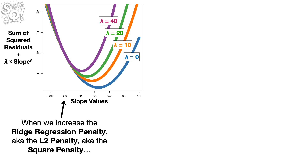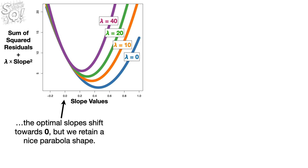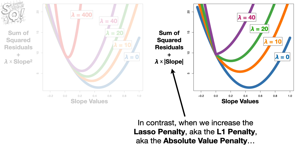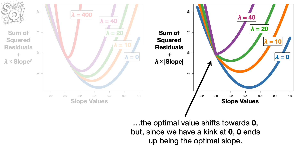In summary, when we increase the ridge regression penalty — a.k.a. the L2 penalty, a.k.a. the squared penalty — the optimal slopes shift towards 0, but we retain a nice parabola shape. And even when we set lambda to something crazy high like 400, we still end up with an optimal value greater than 0. In contrast, when we increase the lasso penalty — a.k.a. the L1 penalty, a.k.a. the absolute value penalty — the optimal value shifts towards 0, but since we have a kink at 0, 0 ends up being the optimal slope.